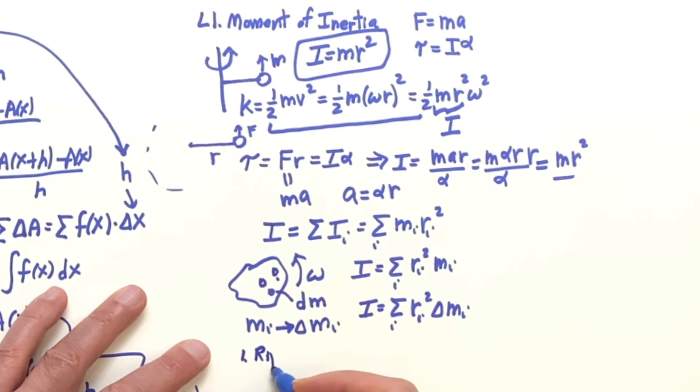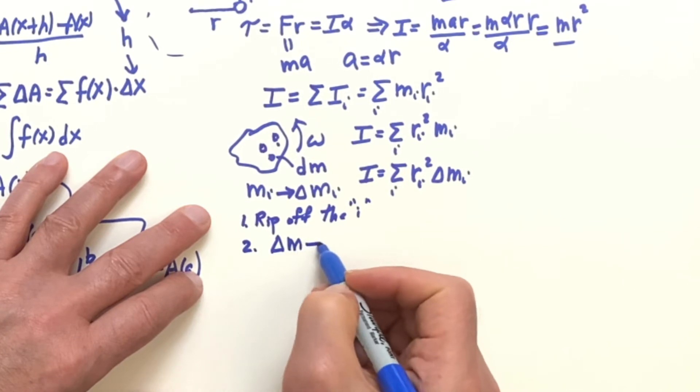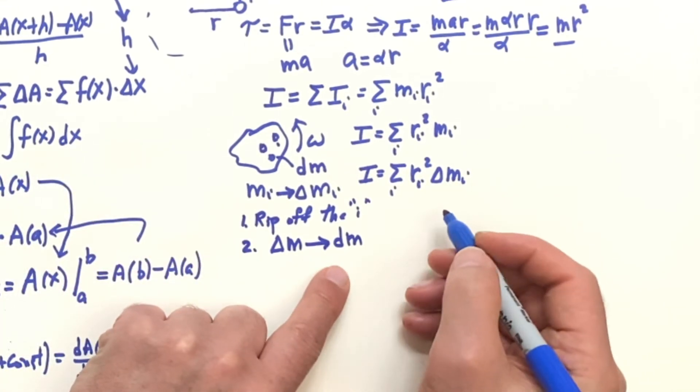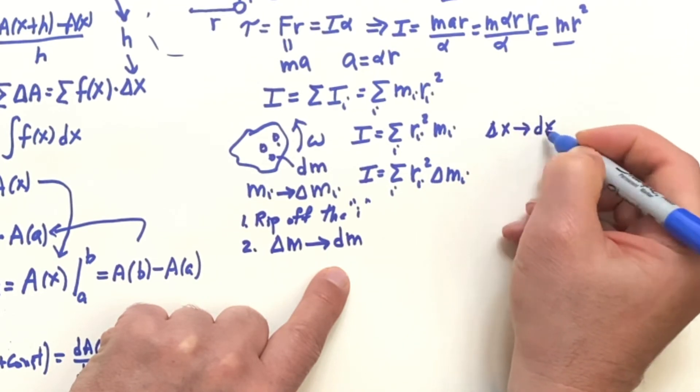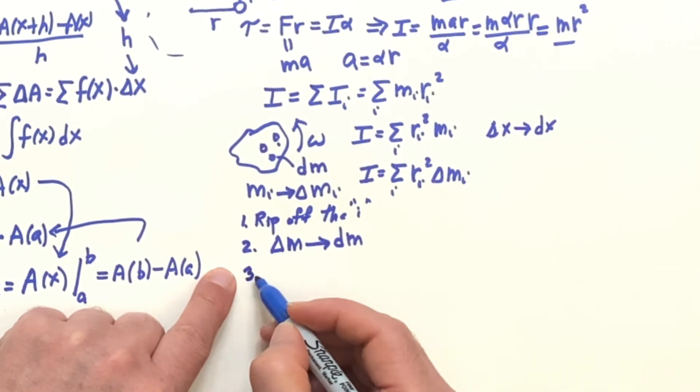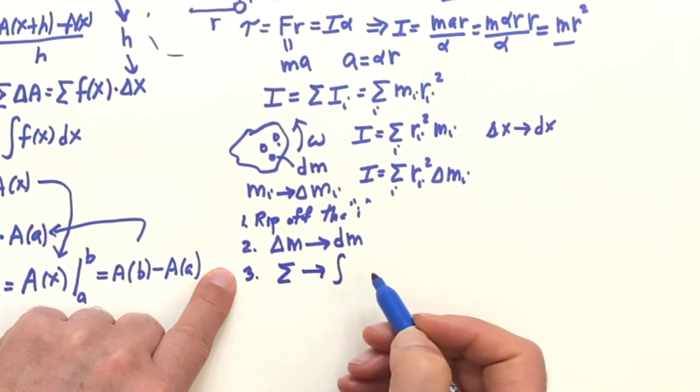Step one, we rip off the I's. You rip off the I's. Step two, you replace the delta M with the infinitesimal dM. You know, whatever it is, if it's a delta X, if this happened to be a delta X, then you would go dX. And then the third case is you change summation sign into a snake, the integral sign.